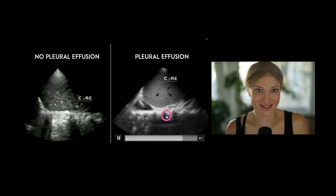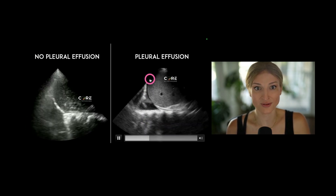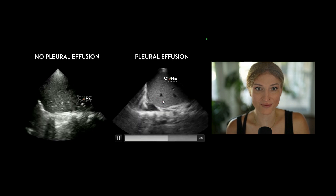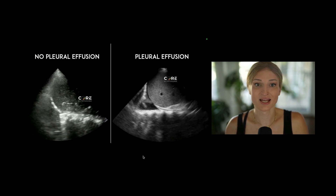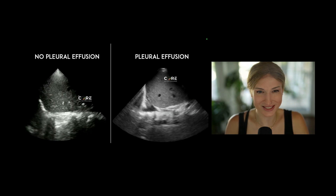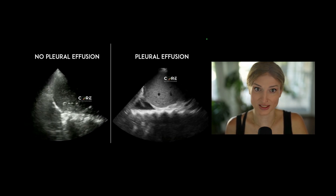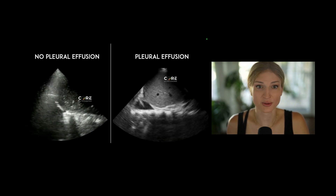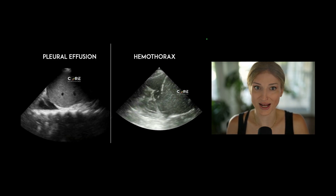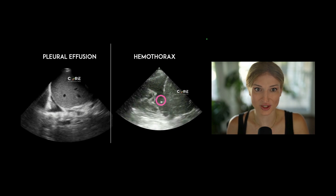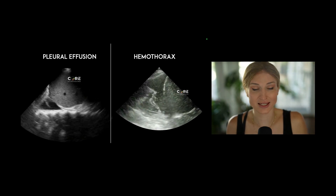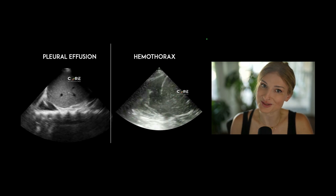Over here we have vertebral bodies easily visible above the diaphragm. We see a hypoechoic fluid collection on the other side of the diaphragm — this is a negative mirror sign, positive spine sign, and this is indicative of a pleural effusion. We don't really know the chronicity of it; it could be from infection or volume overload. We need to know it came from a trauma patient to diagnose it as a hemothorax. That said, if you see what's called a plankton sign — swirly material in the pleural effusion — that is more likely to be an exudative effusion, meaning more likely to be a hemothorax.